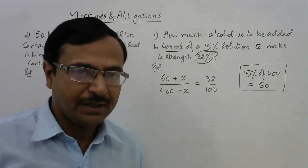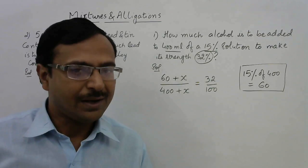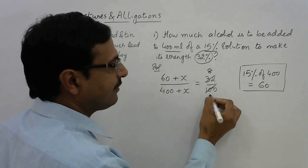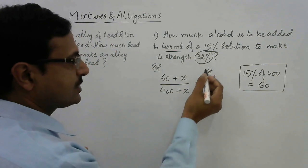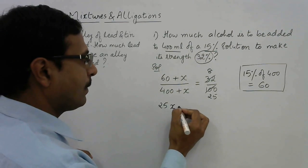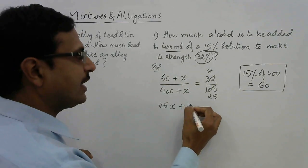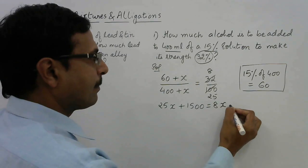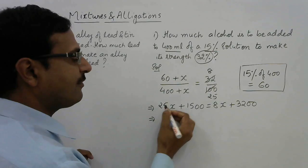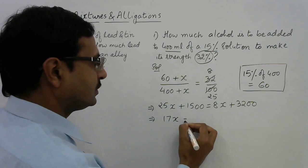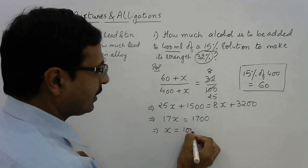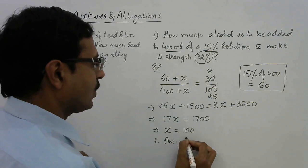This is a simple linear equation in one variable. 32/100 simplifies — cancel 4 from both sides giving 8/25. Cross-multiplying: 25(60 + x) = 8(400 + x), which gives 25x + 1500 = 8x + 3200. So 25x − 8x = 3200 − 1500, that is 17x = 1700, giving x = 100. Therefore 100 ml of alcohol is to be added.